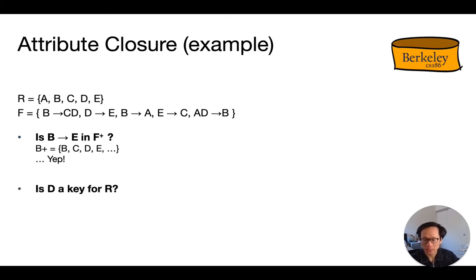Next question, is D a key for R? Is it a candidate key? So, we need to see if D determines everything. Let's start with D. We know that D determines E, so let's throw E in there. We have D and E. Now, E determines C, so we have D, E, and C. If you look at the left-hand side of the rules in F, there's nothing else that we can do at that point. So the closure of the attribute of D is D, E, and C. Since that doesn't cover all of R, so D unfortunately is not a candidate key for R.